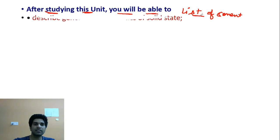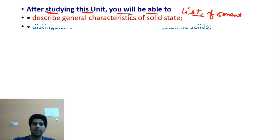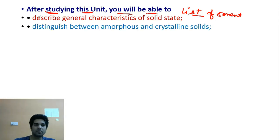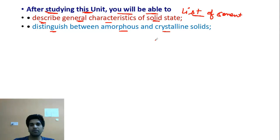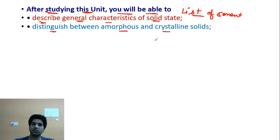Our first topic is: describe general characteristics of solid state. The second topic is: distinguish between amorphous and crystalline solids. Perhaps you are listening to these terms for the first time, but don't be hesitant about that because you are going to be familiar with all those terms after studying this unit. Nothing to worry about.